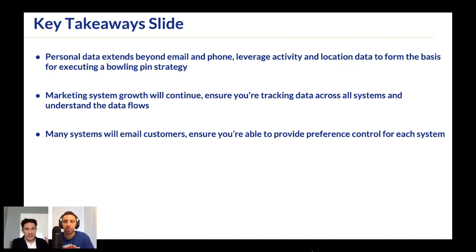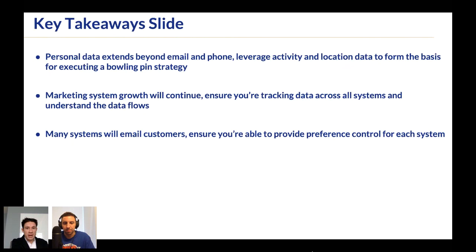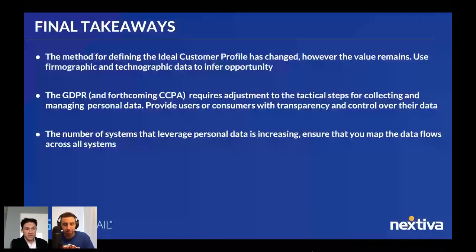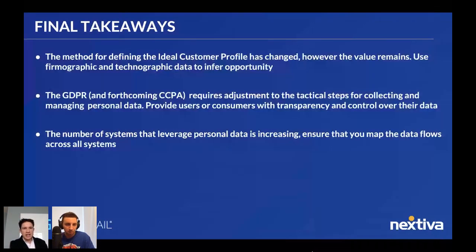Save yourself a lot of money and heartache by implementing a preference management system. Final key takeaways: one, personal data extends beyond an email and a phone number — these are traditional PII. There's a lot more you can now leverage about an individual. Two, as you add systems, make sure you know where that data is going between those systems — understand the data flows. Three, that leads to preference control. You've got a lot more data, you can leverage it, and you should for people whose information you've collected.